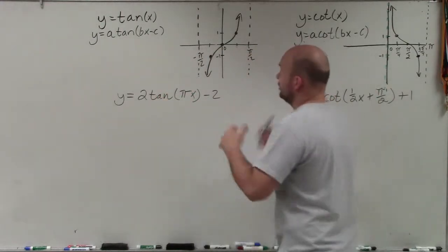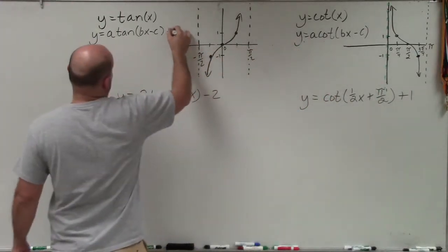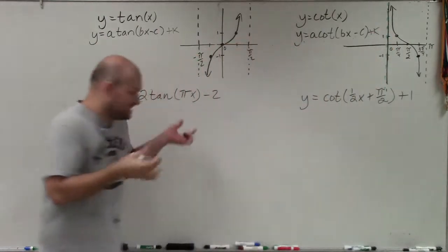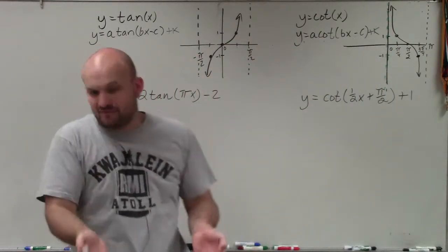I have the tangent and the cotangent, and I know there's going to be a vertical shift, which would be our k, because it's not inside the parentheses, not within our function. It's outside of our function.